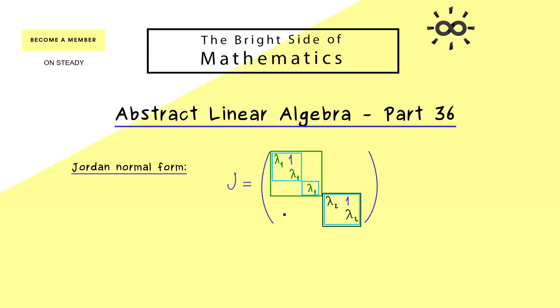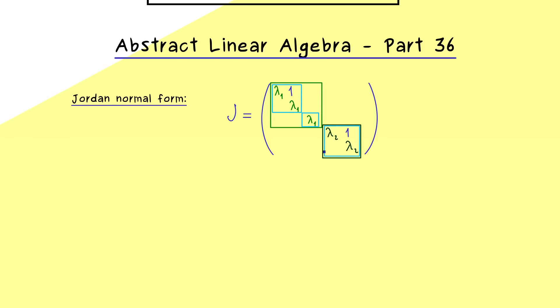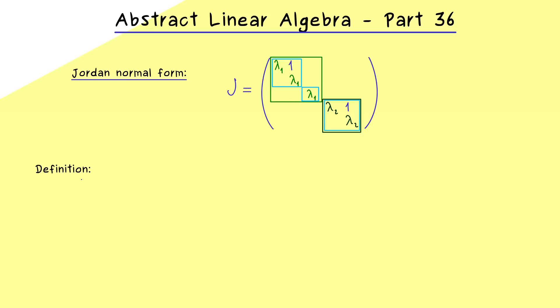And in fact we will see soon that the whole proof about the Jordan normal form is just about the behavior of these Jordan boxes. And you should see, in order to do that we have to talk about eigenvalues and eigenvectors. And I can tell you, what we need to do is to generalize the concept of an eigenspace.